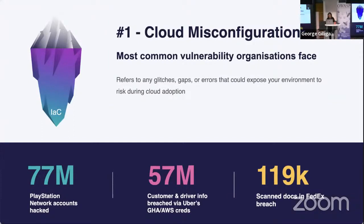The number one IaC vulnerability is cloud misconfiguration — one of the most common vulnerabilities organizations face. It refers to glitches, gaps, or errors that expose your environment to risk during cloud adoption. Real examples include PlayStation Network with 77 million accounts hacked, FedEx with 119,000 scanned documents breached, and Uber, where a private repo went public with hard-coded AWS credentials, resulting in 57 million customer and driver records breached.